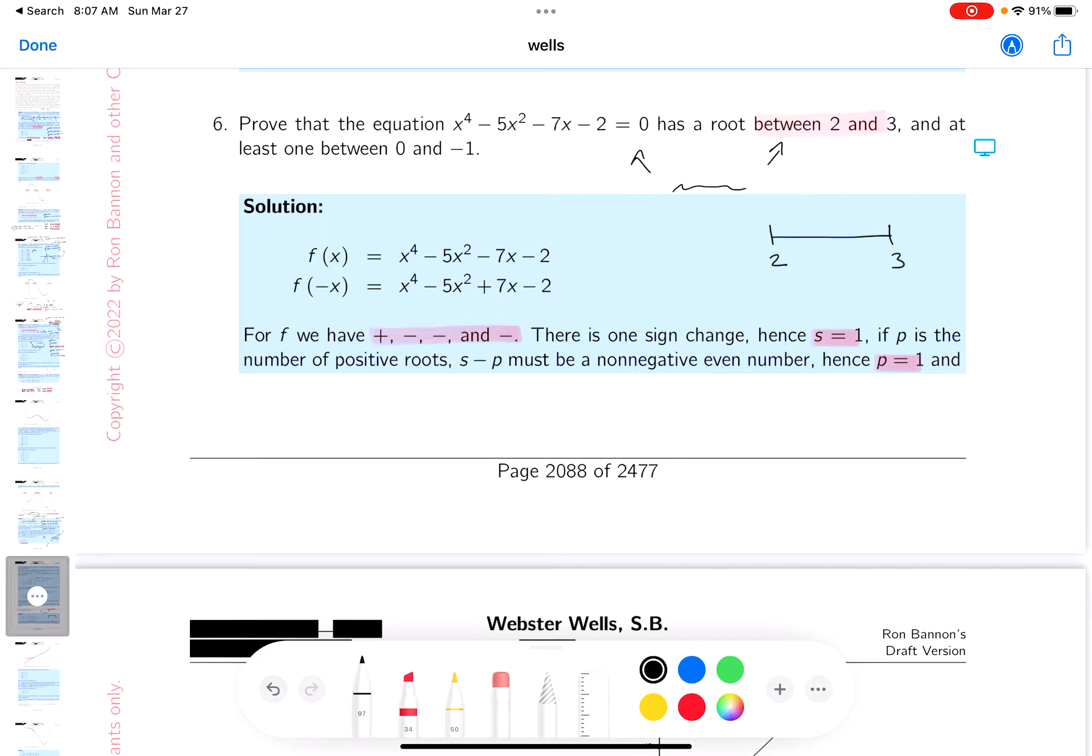Now granted, looking at it, I'm going to say at 3 it's positive, and at 2 it's negative. So it's got to go through once between that, because the p is 1. It goes through once. So we just showed that part.